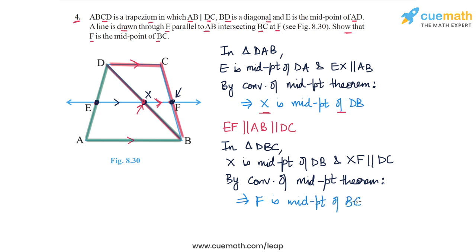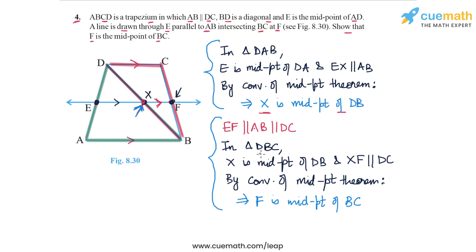The proof happens in two steps. First, we prove that the intersection point X is the midpoint of DB by applying the converse of the midpoint theorem to triangle DAB. Then, using the fact that X is the midpoint of DB, we prove that F is the midpoint of BC by applying the converse of the midpoint theorem to triangle DBC. This is how we solve question number 4.